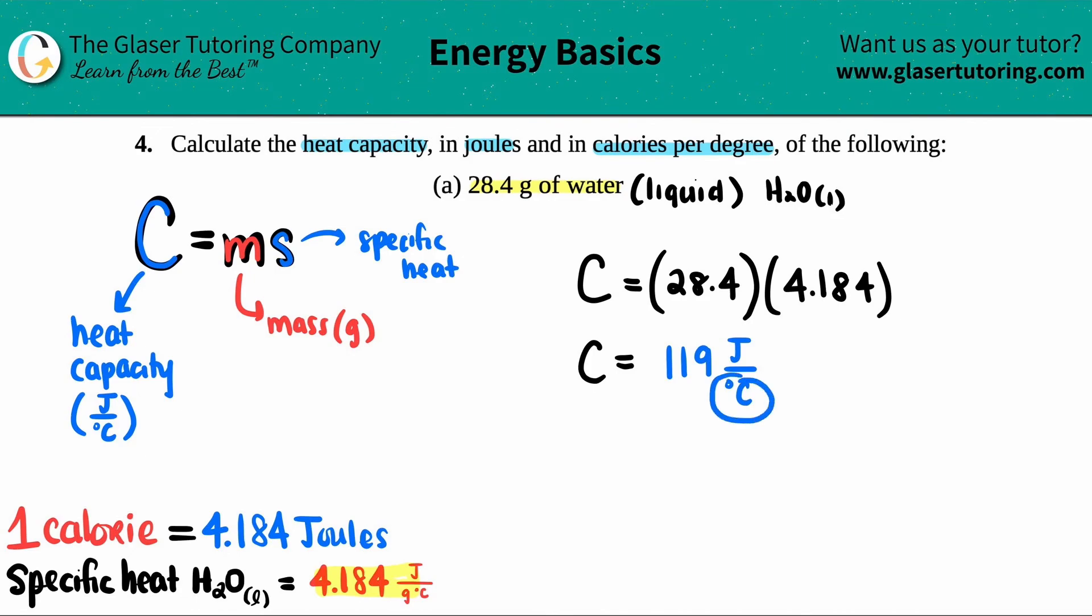This is basically saying for water, for every one degree Celsius you will have 119 joules. This is the first answer in joules per degree Celsius. Now we just got to find out what it is in calories.